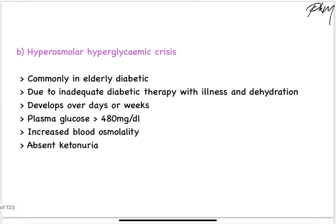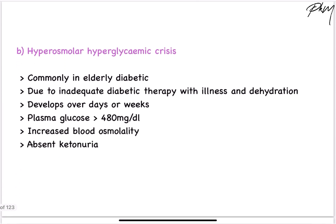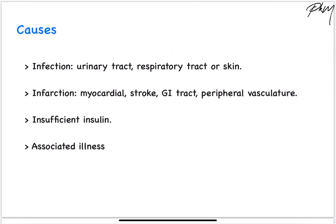Moving on to HHS or hyperosmolar hyperglycemic state, which is usually seen in elderly patients with diabetes mellitus. It is due to inadequate insulin along with new onset illness or dehydration. It usually develops over a period of a week and presents with raised blood osmolality, but ketonuria is absent in HHS — that is one of the main differences between HHS and DKA.